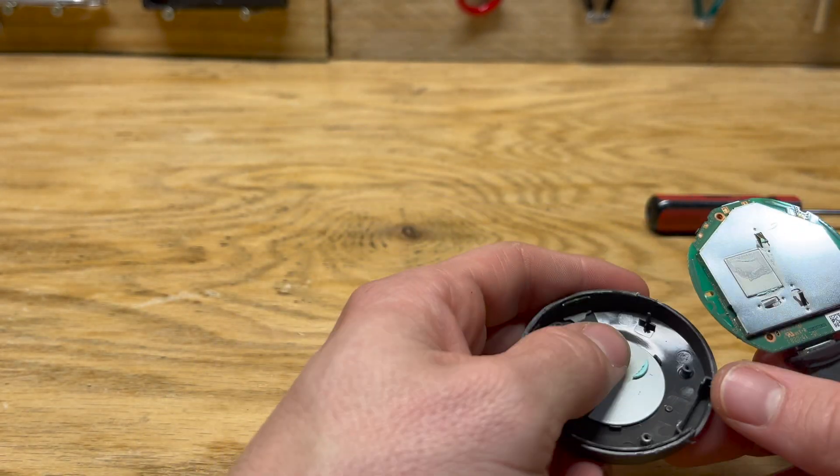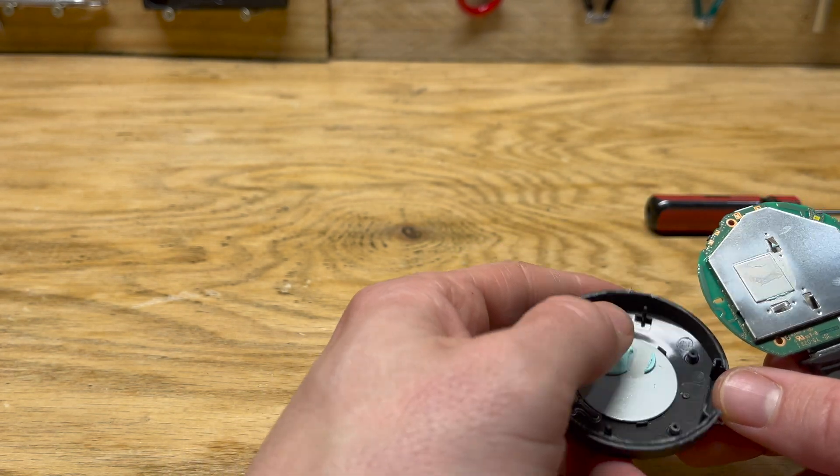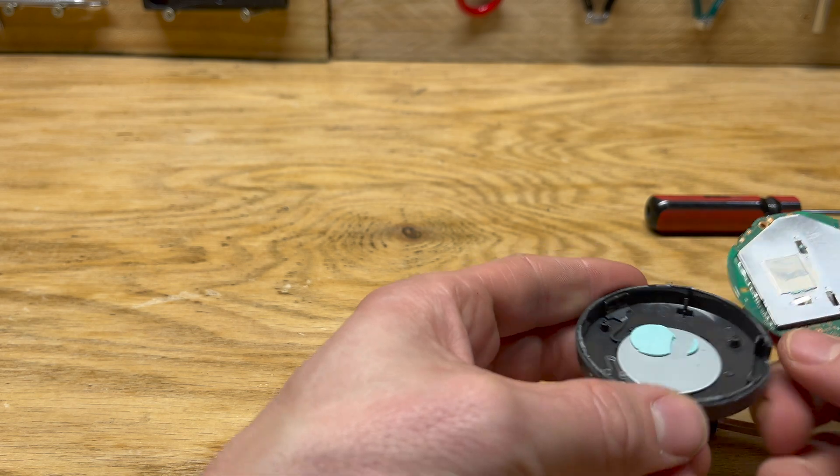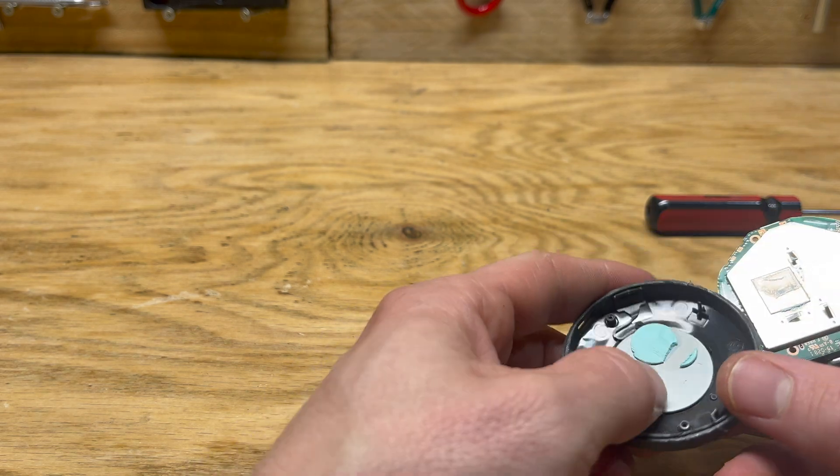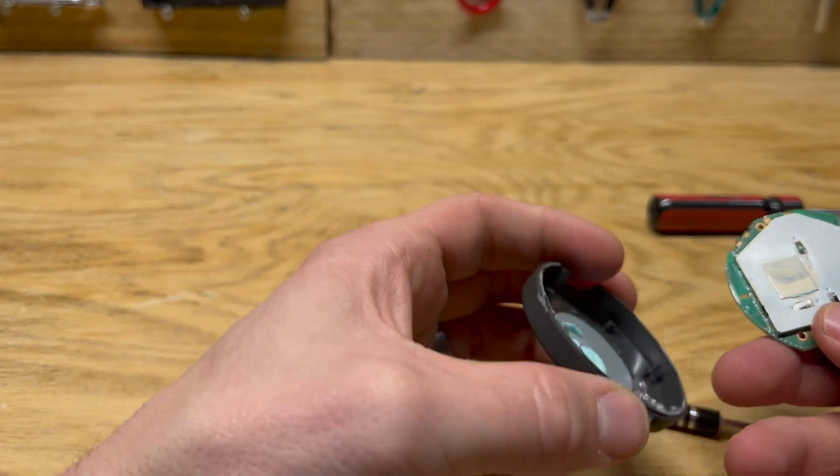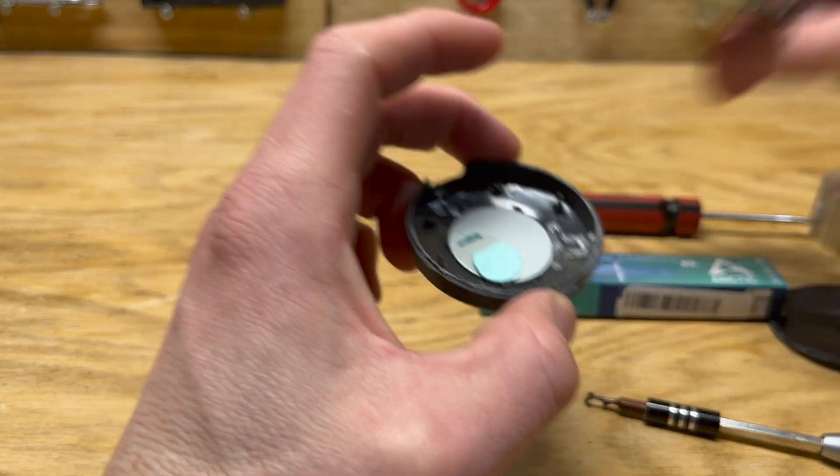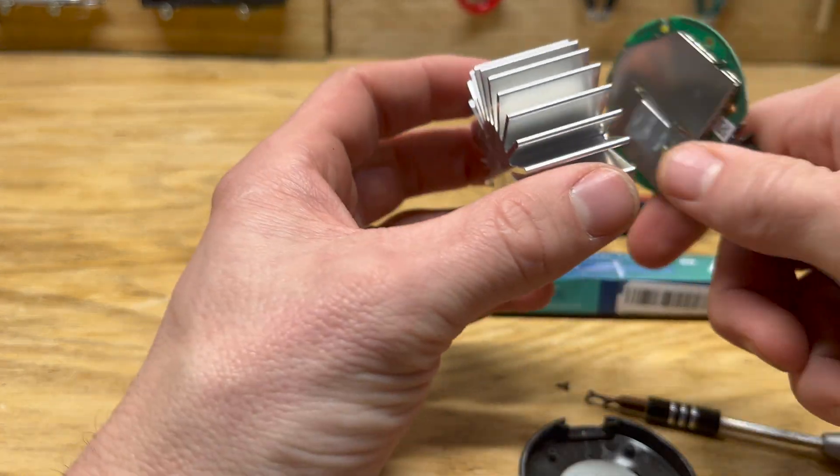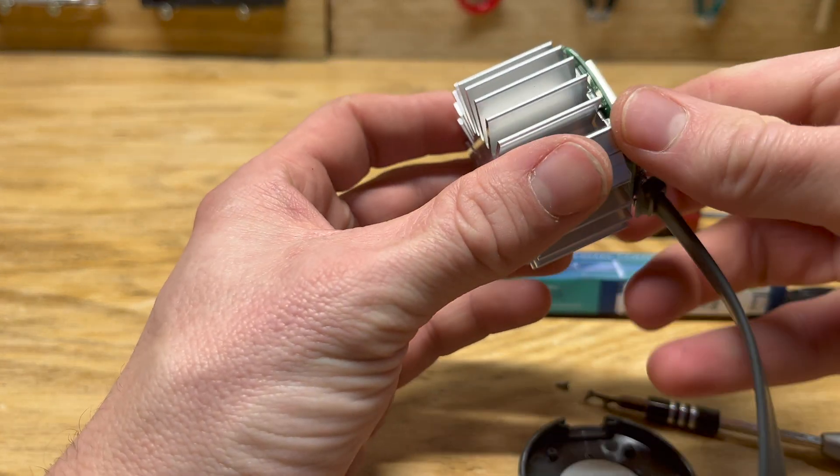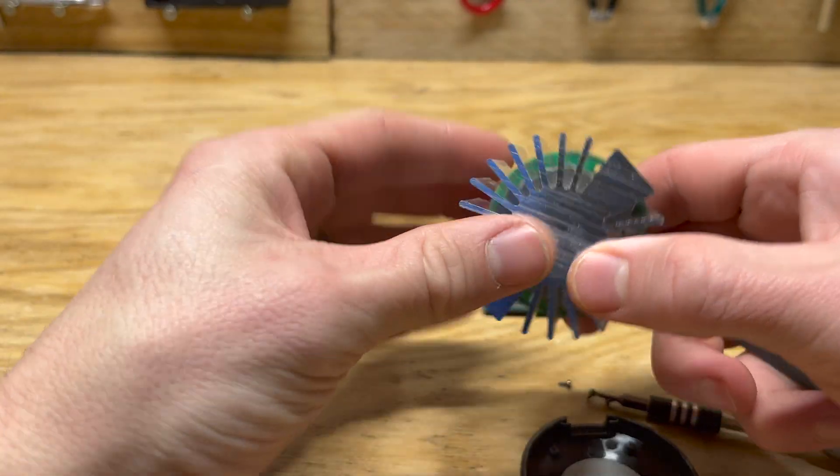You can see here this is that thermal paste that basically is not really working anymore. This is a heat sink right here that it uses.